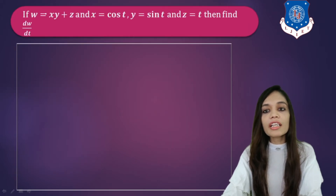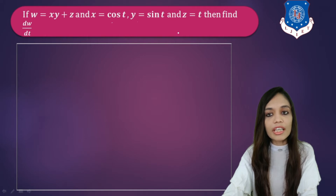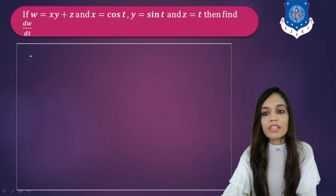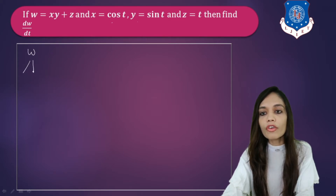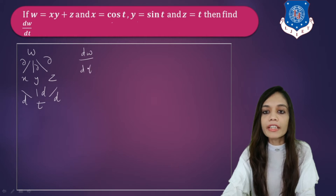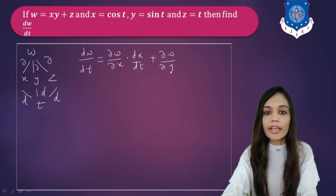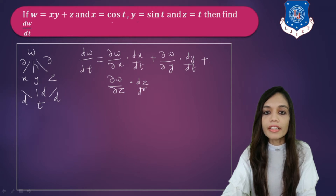Now let us solve one example. We are given W = XY + Z, where X = cos T, Y = sin T, and Z = T. We have to find dW/dT. W is a function of X, Y and Z, and X, Y, Z are functions of T. The formula of dW/dT will be ∂W/∂X into dX/dT plus ∂W/∂Y into dY/dT plus ∂W/∂Z into dZ/dT.